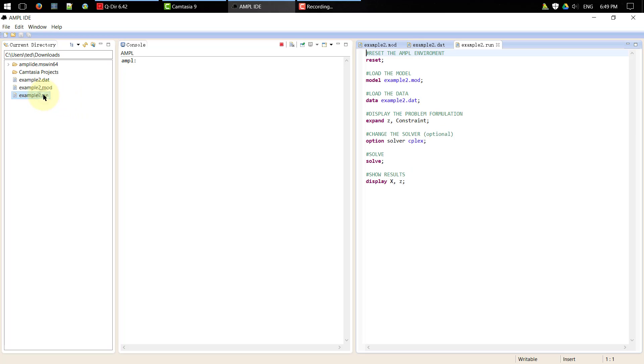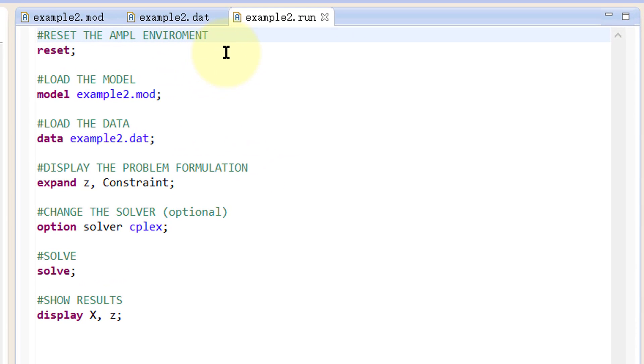Now open the command file example2.run by a double click. When you debug the programs and make small changes, you may need to run them multiple times. If you don't use reset to clear the old model variables, you cannot load new ones with the same names. You need to reset to allow AMPL to forget the old variables.